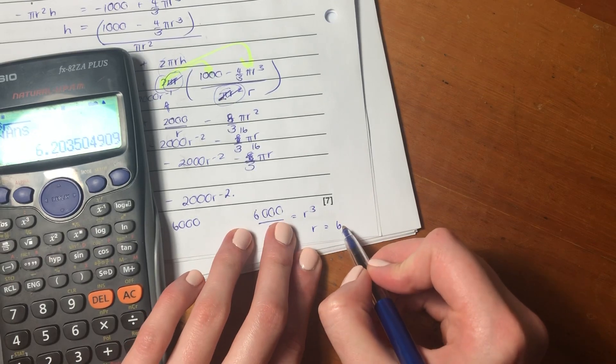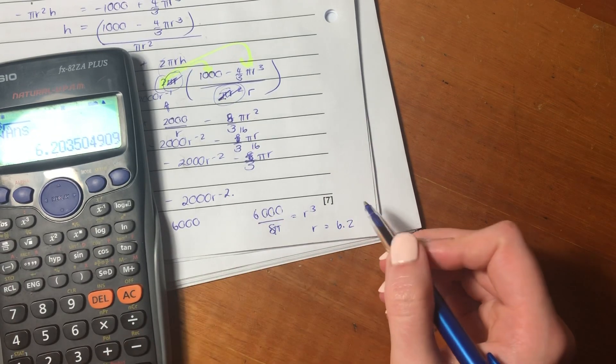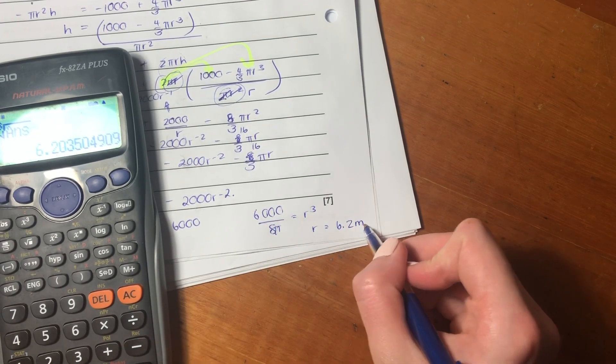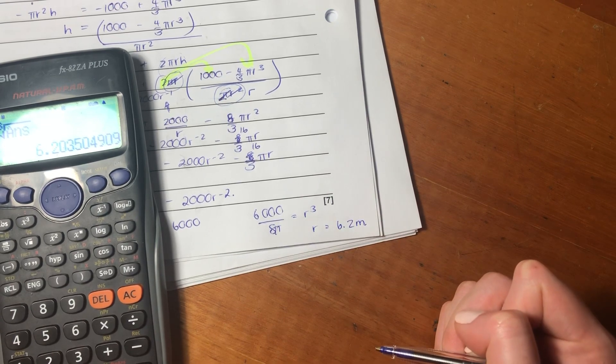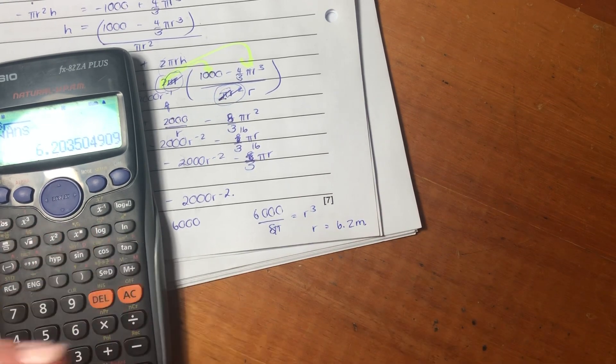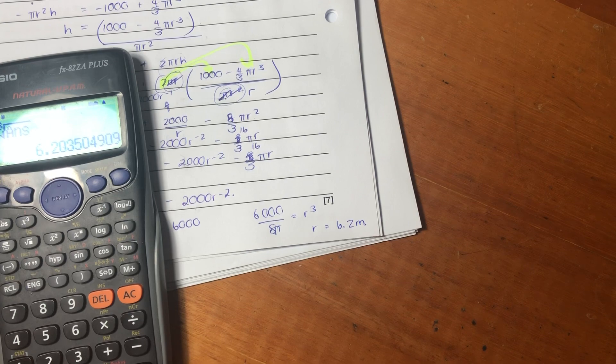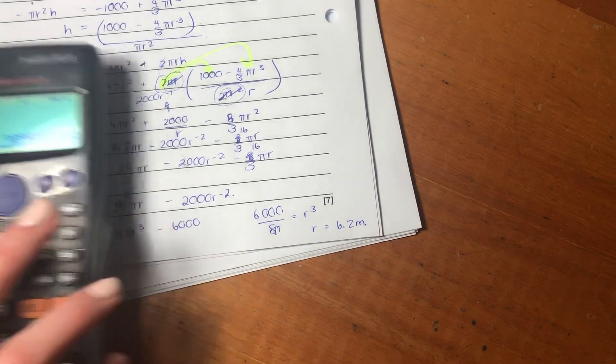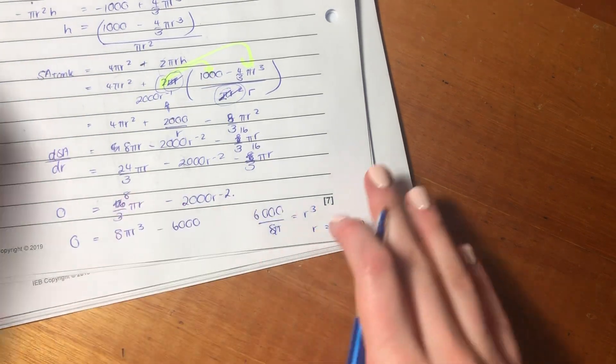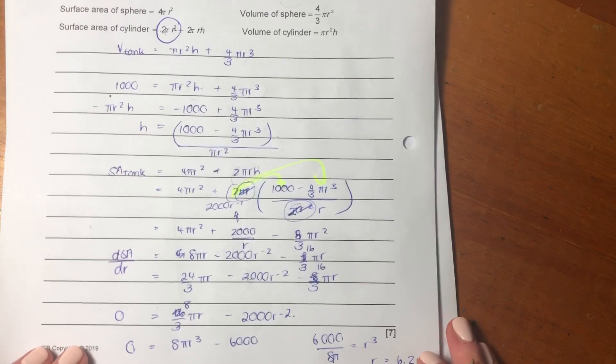R equals 6.2. 6.2 what? Meters. And that's the minimum. So, it's important here to understand surface area, to understand what we're trying to do to understand derivatives, and then, finally, to just do some algebraic manipulation.